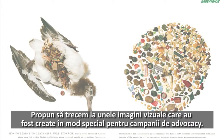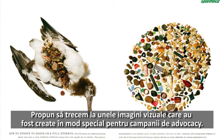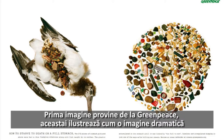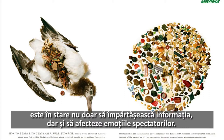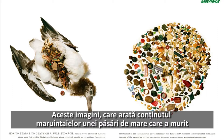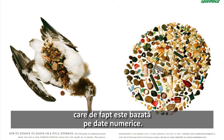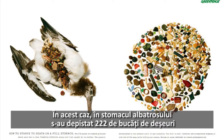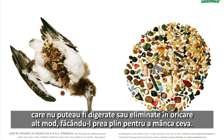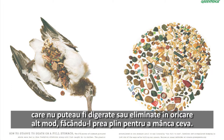Let's move on to some visualizations that were specifically created for advocacy campaigns. Our first one comes from Greenpeace and it shows how a dramatic image can immediately not only share information but can engage the viewer's emotions. These images, which show the contents of a seabird that starved to death full of trash, is quite powerful in its minimalist approach. It is in fact backed by numerical data — the albatross was found with exactly 222 pieces of garbage in its stomach that could not be digested or otherwise expelled, rendering it too full to eat anything.